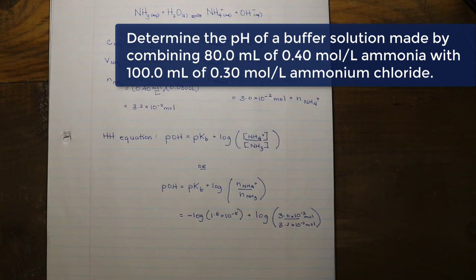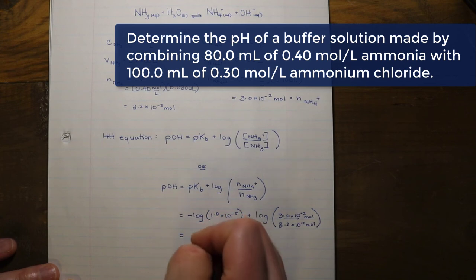You are using the correct syntax in your calculator, so you will have to get used to your calculator. Different calculators are going to calculate this differently. The value you should come up with is 4.72 for your pOH.